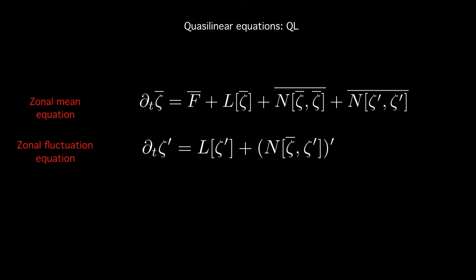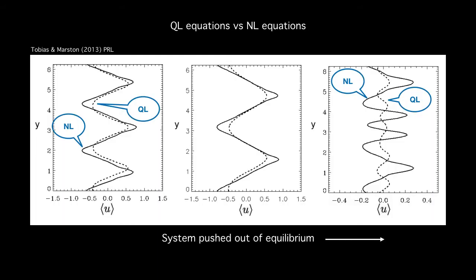How do quasi-linear equations perform against non-linear equations? So previously Tobias and Marston performed simulations which involves stochastic forcing where the system was driven slowly out of equilibrium. You can think of this as meaning an increasing relaxation time in our case. Now they notice that when the system is close to equilibrium that is when something like tau is very low, quasi-linear equations pretty much get the right number and strength of jets. Whereas if the system is pushed out of equilibrium, quasi-linear equations start to fail. So as you move towards more realistic parametric regimes it turns out that QL is too simplistic.